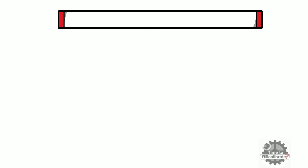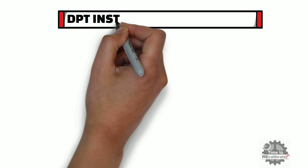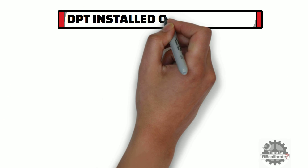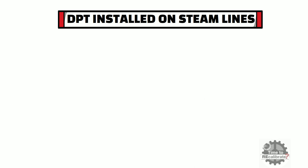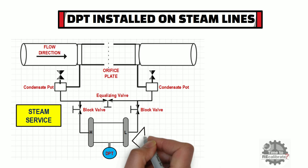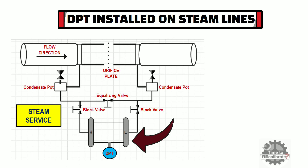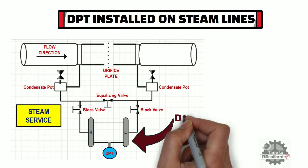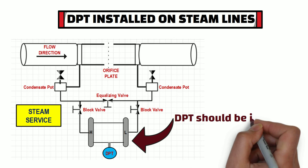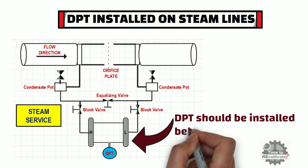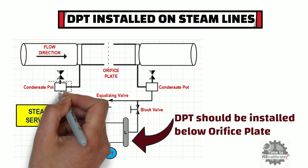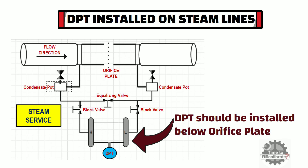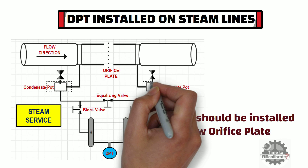Now let's take one more situation when the differential pressure transmitter is installed on steam lines. As you can see, for steam lines, the DP transmitter should be installed below the orifice plate with condensate pots. Both pots should be installed at the same level.